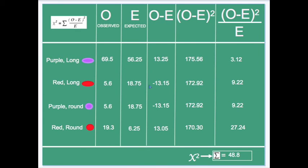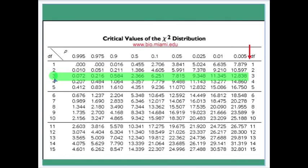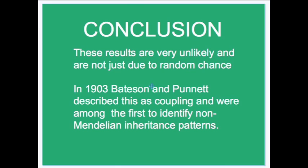Here you can see the results of the Bateson, Punnett, and Saunders cross so that we can do a chi-squared test. Chi-squared comes to 48.8. Moving to the table of critical values and locating the degree of freedom, which is three, and moving along this row to find our value for chi-squared, we note that 48 would be way to the right of 12.83. A value of 12.83 gives us a p-value of 0.005, which is well below the threshold of 0.05 required in most scientific research to demonstrate that the observed value is significantly different from the expected value. Our actual p-value is much smaller than 0.005, demonstrating that the statistical evidence fully supports the conclusion of Bateson, Punnett, and Saunders.